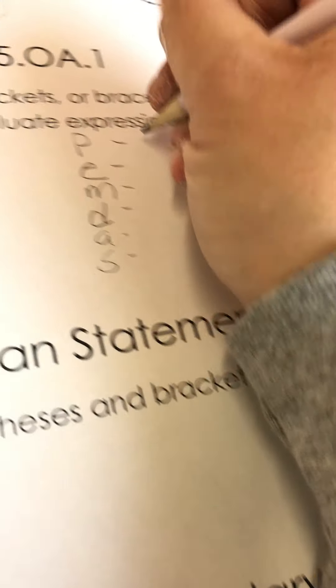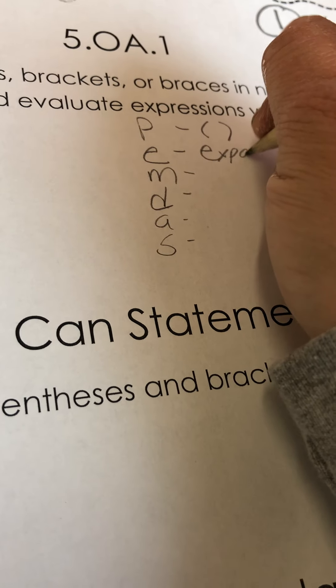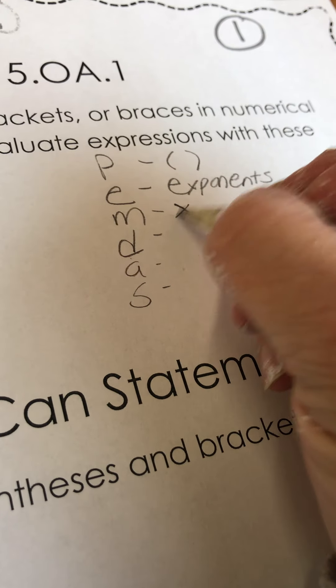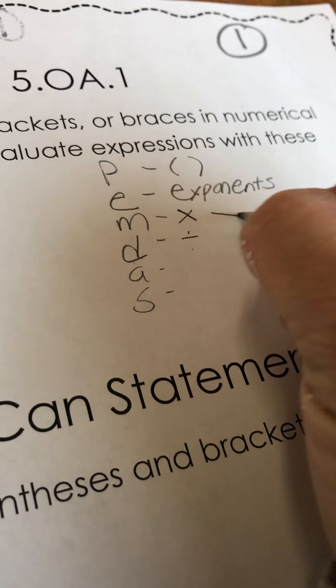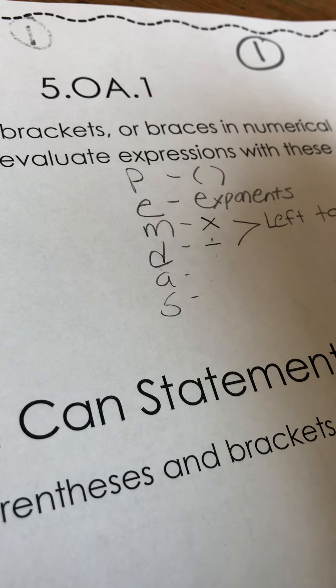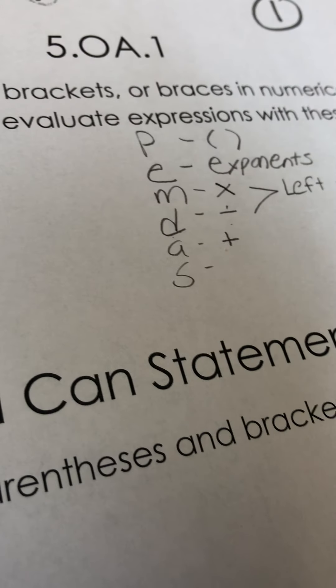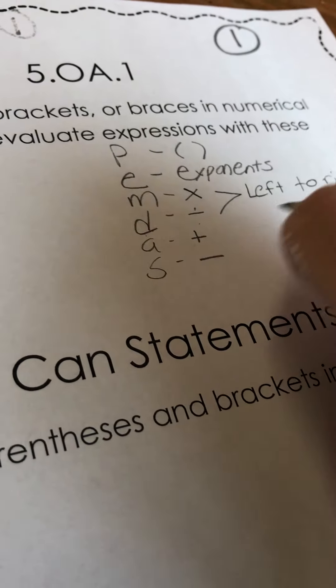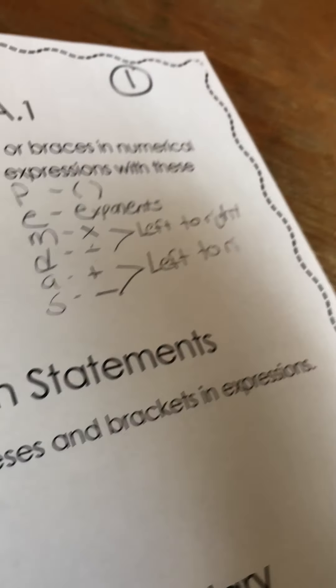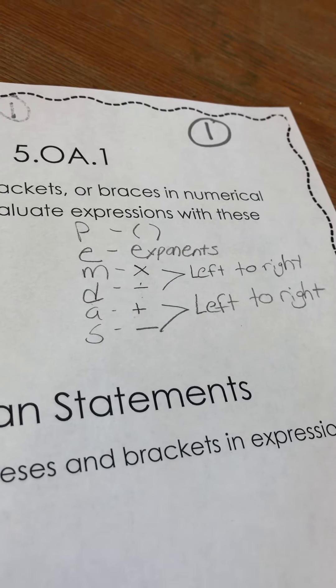P stands for parentheses. E stands for exponents. M and D stand for multiply and divide, and you do that left to right. And then A stands for addition and S stands for subtraction. And again, you do those left to right. So this is the order that you perform operations to make equations correct.